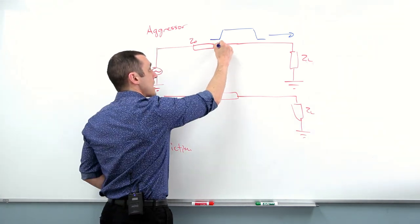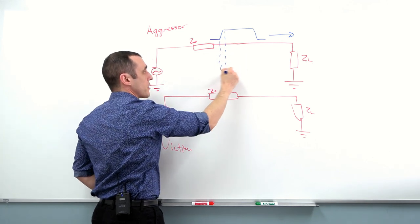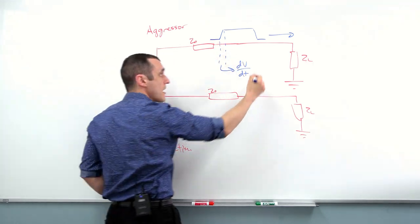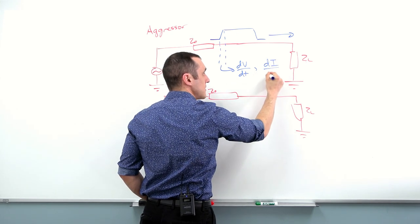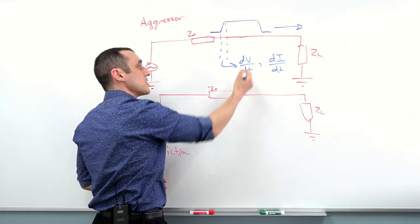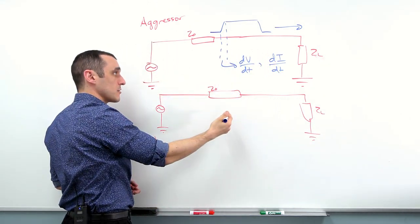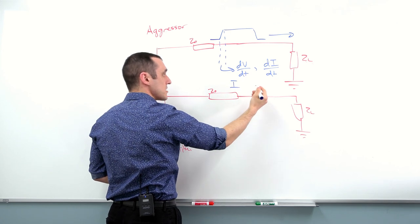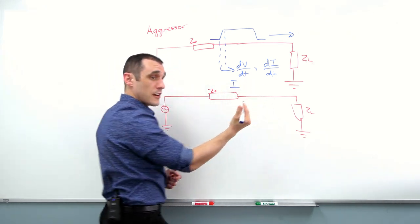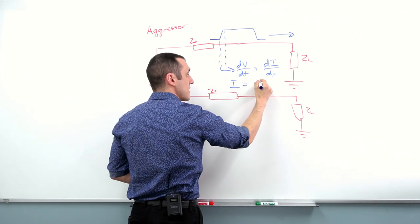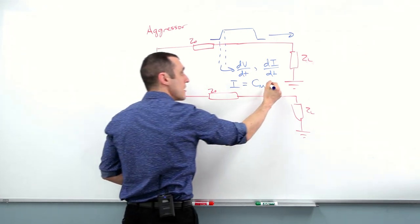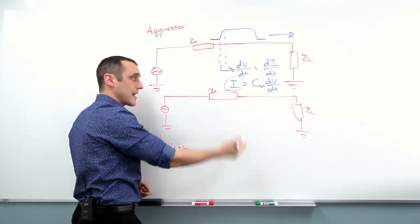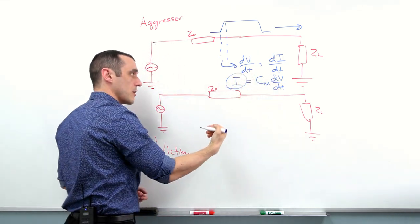During this switching action, this is the period in time where you will have a dv/dt — a change in voltage over time — and some di/dt, meaning some rate of change of the current over time. It's these two quantities that determine how noise is coupled into the victim trace. The dv/dt term determines how much current is induced in the victim trace, and that current is determined by the mutual capacitance between the two lines. The mutual capacitance multiplied by the rate of change in voltage gives the current induced in the interconnect.